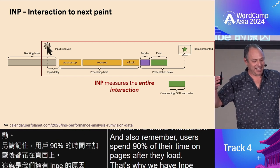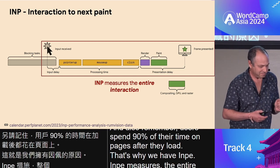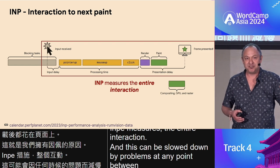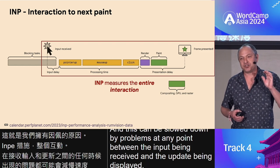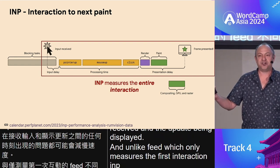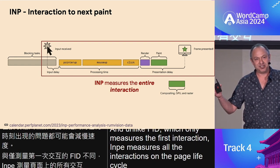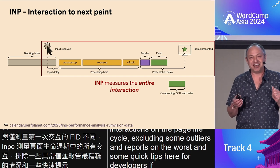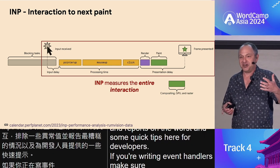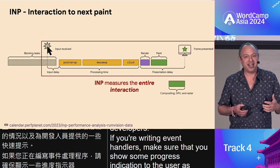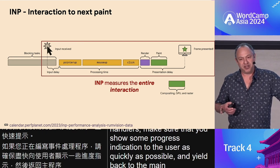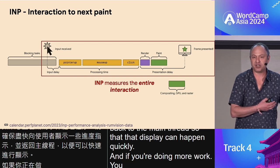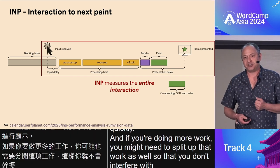INP measures the entire interaction. This could be slowed down by problems at any point between the input being received and the update being displayed. Unlike FID, which only measures the first interaction, INP measures all the interactions on the page lifecycle, excluding some outliers, and reports on the worst. Some quick tips for developers: if you're writing event handlers, make sure you show some progress indication to the user as quickly as possible, and yield back to the main thread so that the display can happen quickly. If you're doing more work, you might need to split up that work so you don't interfere with subsequent interactions the user has.